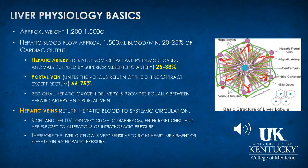The liver weighs approximately 1.2 to 1.5 kilograms. The hepatic blood flow is approximately 1.5 liters of blood per minute, which represents 20 to 25 percent of the total cardiac output. One-third of the blood flow comes from the hepatic artery, which in most cases comes from the celiac artery, but sometimes it can also come off the SMA.